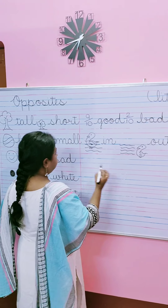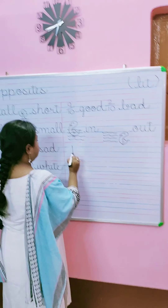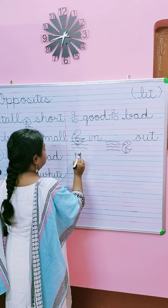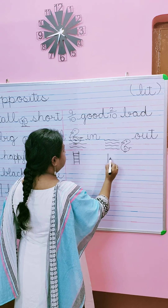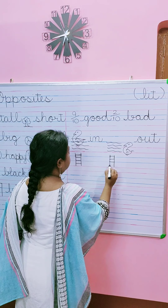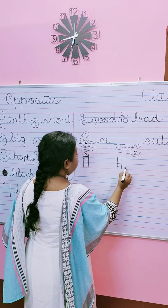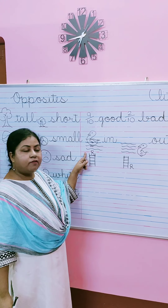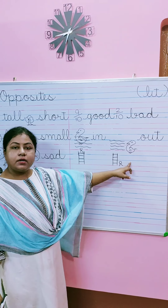Now I draw a ladder, one more ladder, and a boy over here and a boy over here. So your boy is up on the ladder and your boy is down. So we will write here up and down.